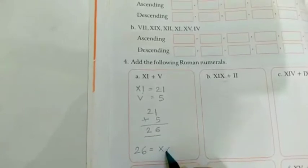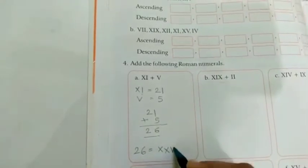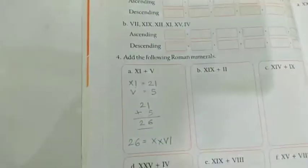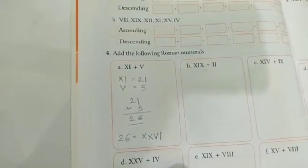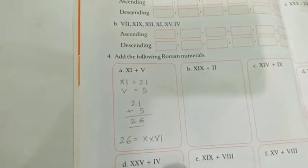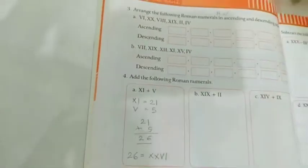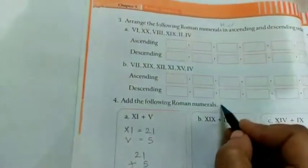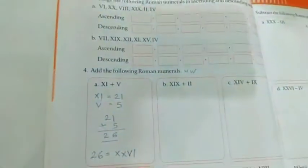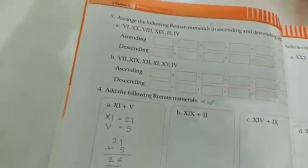So X, X, 20, 5 is 25 and I that is 26. So like this you have to convert and add. So this is your homework, question number 4. Like this you have to add.